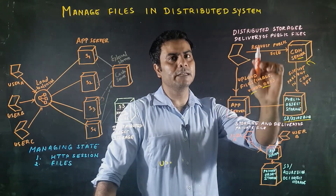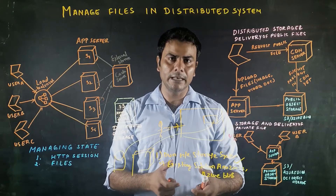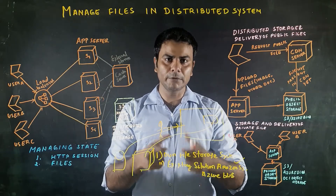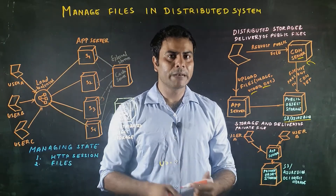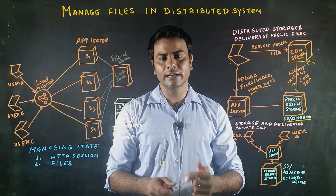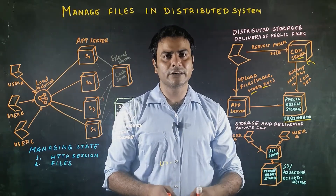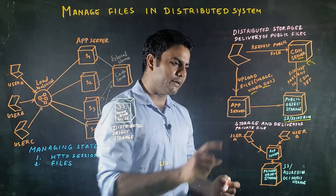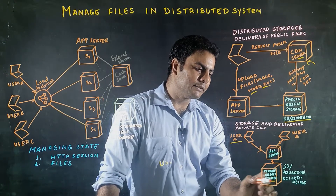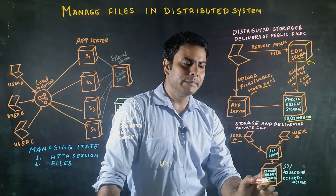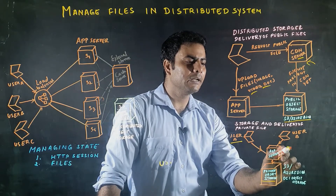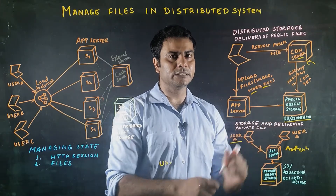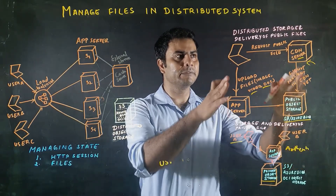This example is for public files. There are two types of files: public files, which are available to all users, and private files, which are available only to specific users. For private files, we cannot just store them anywhere — we need some kind of authentication or authorization mechanism before accessing those files. Therefore, we should not store private files on the CDN server. If user A uploads an image and user B wants to access it, user B must perform authentication and authorization first.